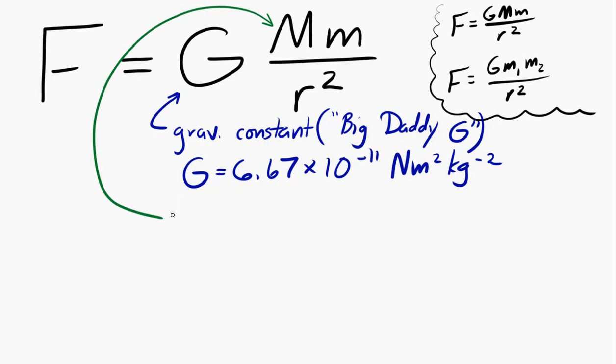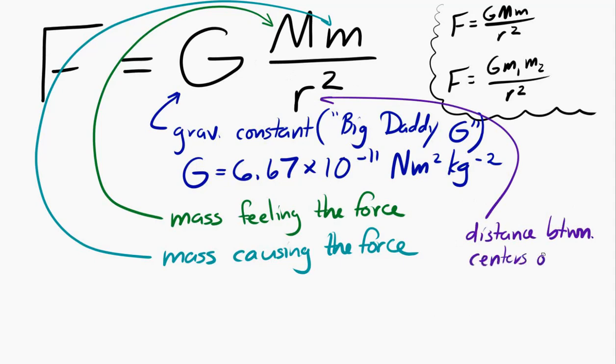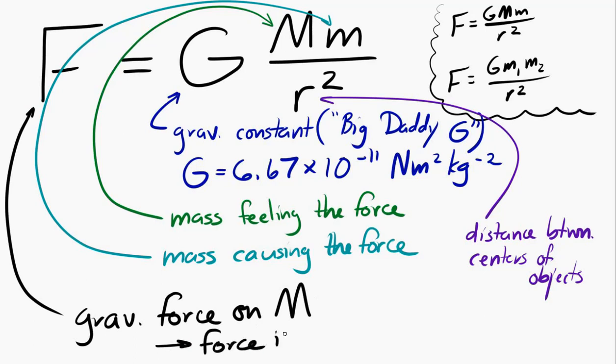Capital M represents the mass that's feeling the force. The mass that the force acts on. The other M represents the mass that's causing the force on the other object. And then R represents the distance between the centers of the objects. And if you use that equation, the force that you get is the gravitational force on capital M. And that force will always be attractive. This equation doesn't tell you that. This equation just gives you the magnitude. The way that you can figure out the direction of the force is know that it's always an attractive force.